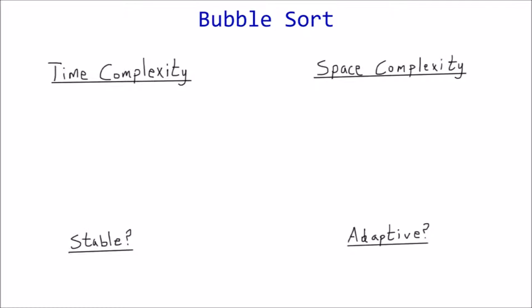Space complexity: bubble sort is an in-place sorting algorithm, so it doesn't require any extra space. By in-place, I mean it doesn't need a temporary array or anything to help store the objects. Hence, this algorithm requires a constant amount of additional space, or Big O of 1.